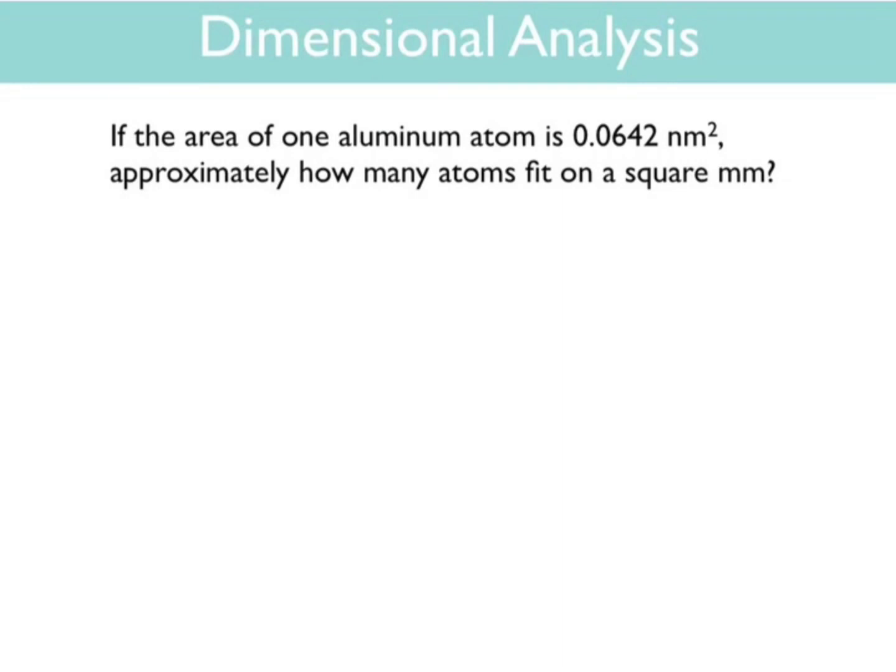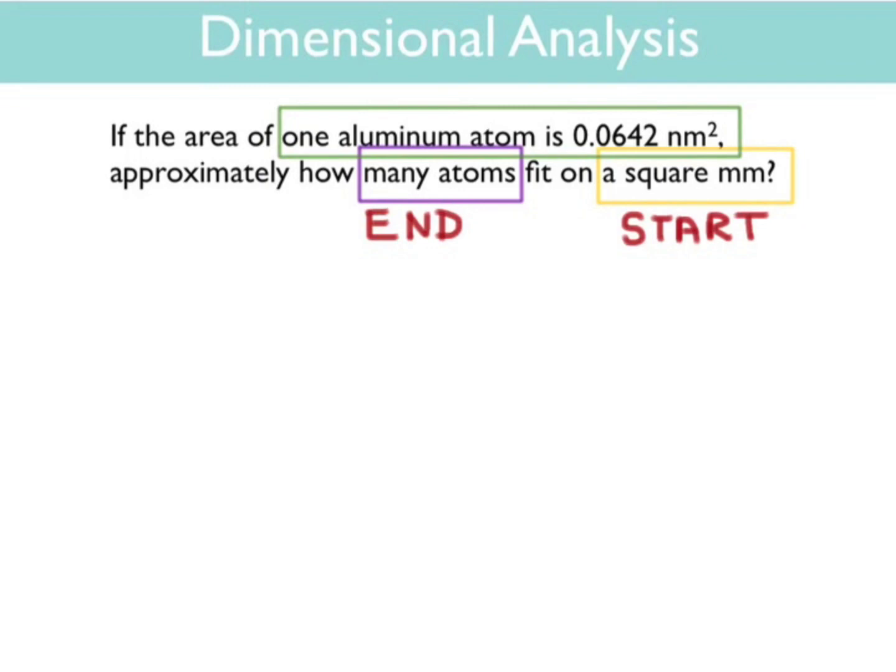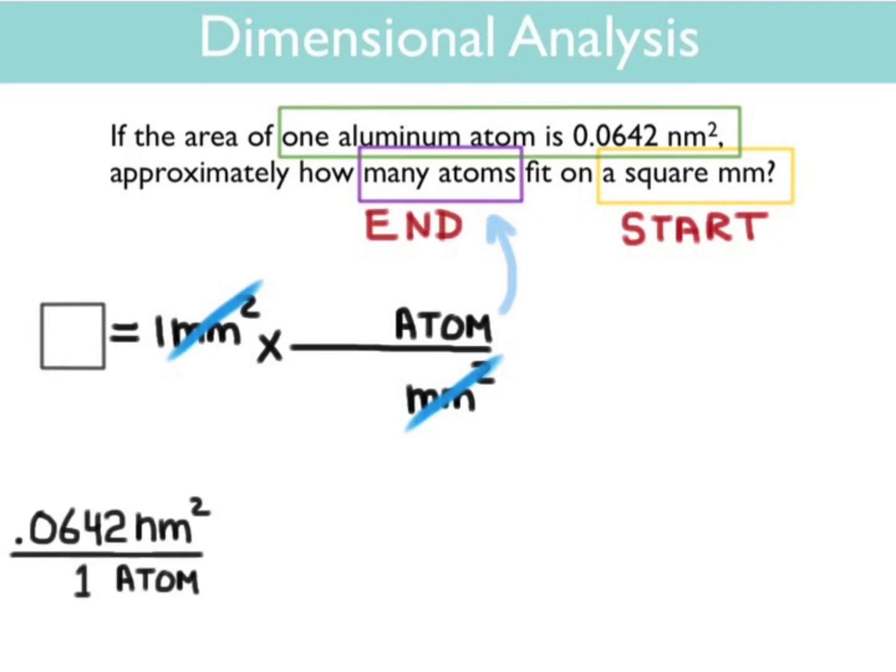Let's try one more problem. This one's a bit of a challenge, so bear with me. If the area of 1 aluminum atom is 0.0642 nanometers squared, approximately how many atoms will fit on a square millimeter? We're starting with a square millimeter. We need to find out how many atoms will fit on it, and we're given a conversion factor of 0.0642 nanometers squared per 1 aluminum atom. We start with 1 millimeter squared. The appropriate conversion factor is millimeters squared per atom. However, we're not given that conversion factor. We're given the area of 1 aluminum atom in nanometers squared. So let's convert that into millimeters squared.